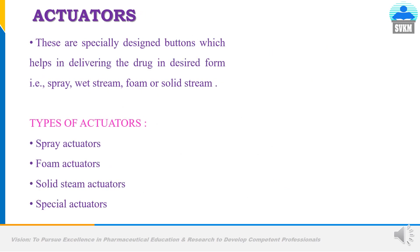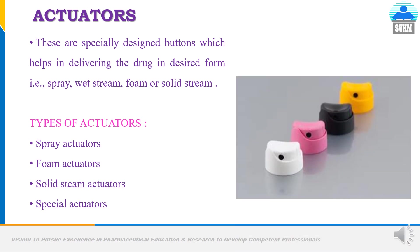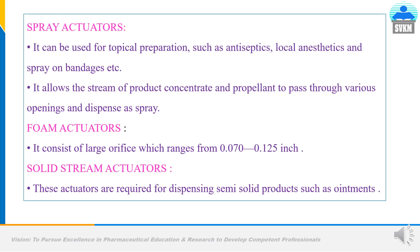Now actuators. What is the use of actuators? These are specially designed buttons which help in delivering the drug in the desired form — that is spray, wet stream, foam and solid stream — meaning different kinds of spray patterns can be attained by using the actuator. There are different types of actuators: spray actuators, foam actuators, solid stream actuators, and special actuators. Spray actuators can be used for topical preparations such as antiseptics, local anesthetics, and spray-on bandages; they allow the stream of product concentrate and propellant to pass through various openings and dispense as a spray. Foam actuators consist of large orifice ranging from 0.070 to 0.125 inch, such as seen in shaving foams. Solid stream actuators are required for dispensing semi-solid products such as ointments.